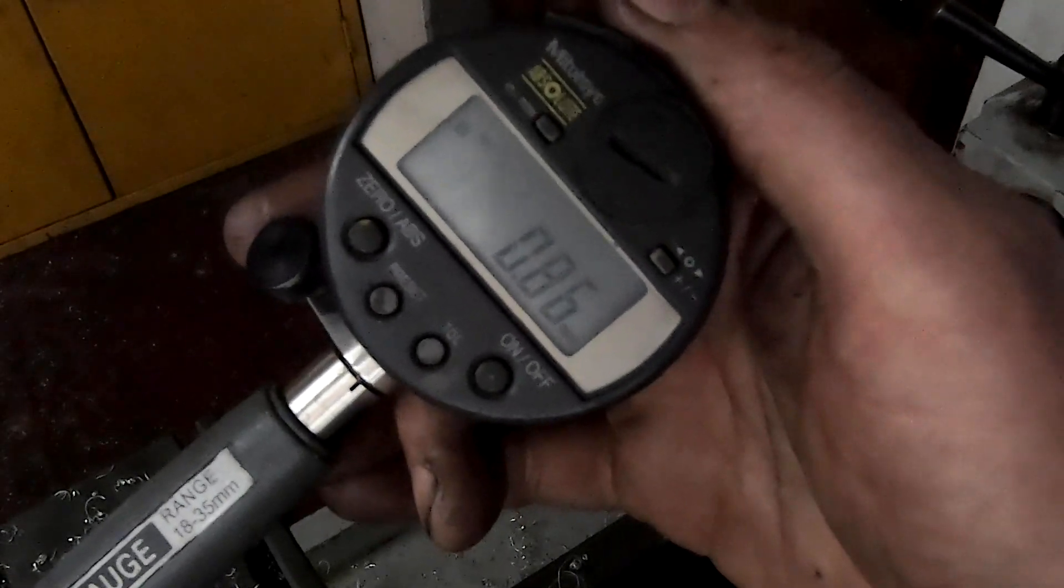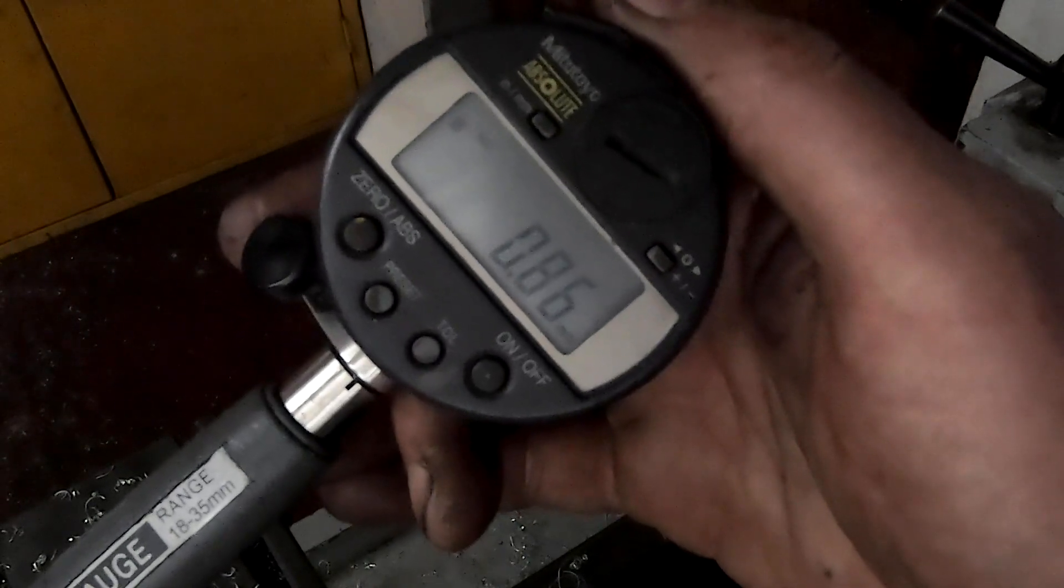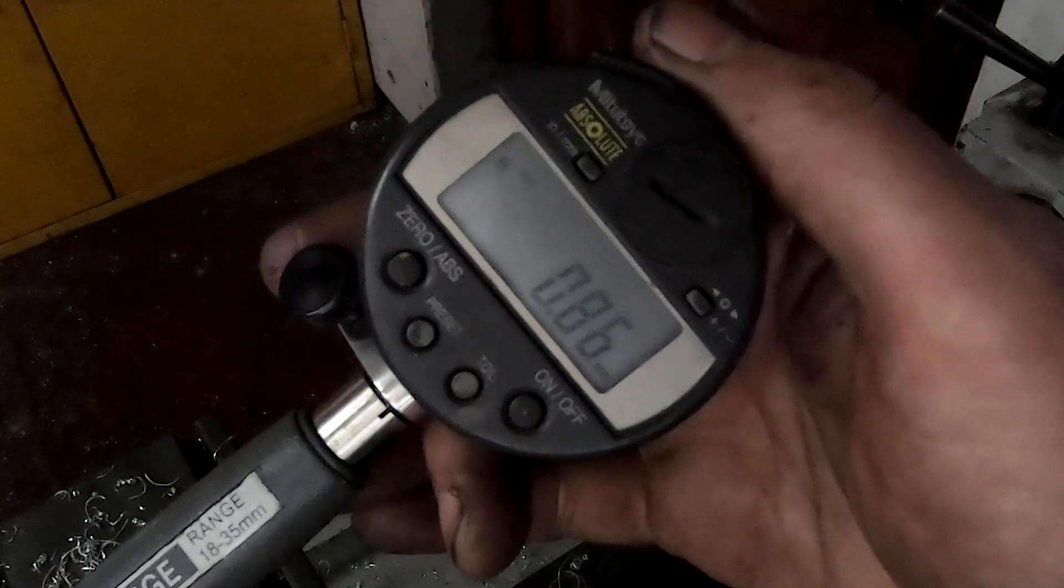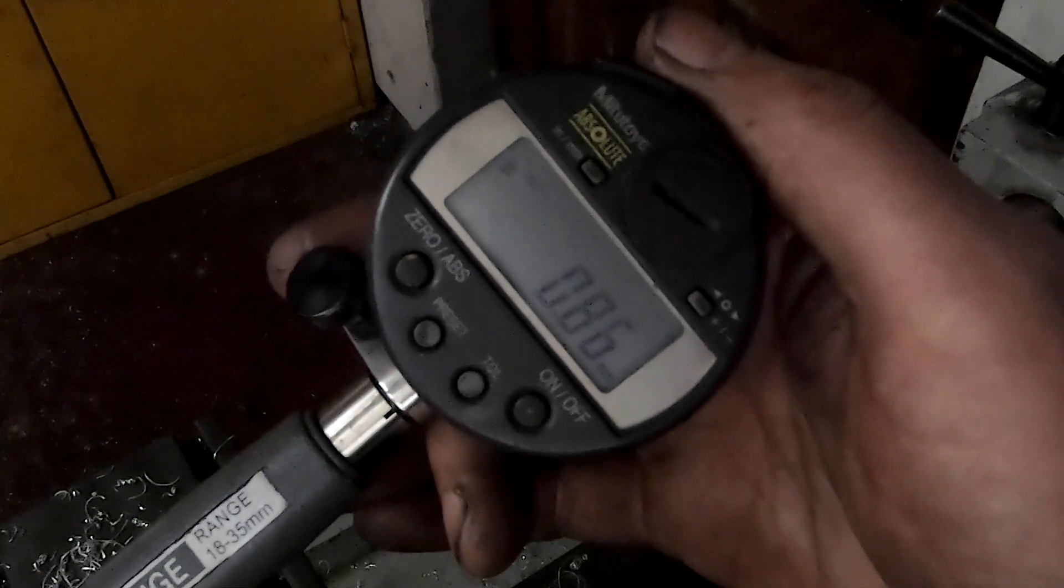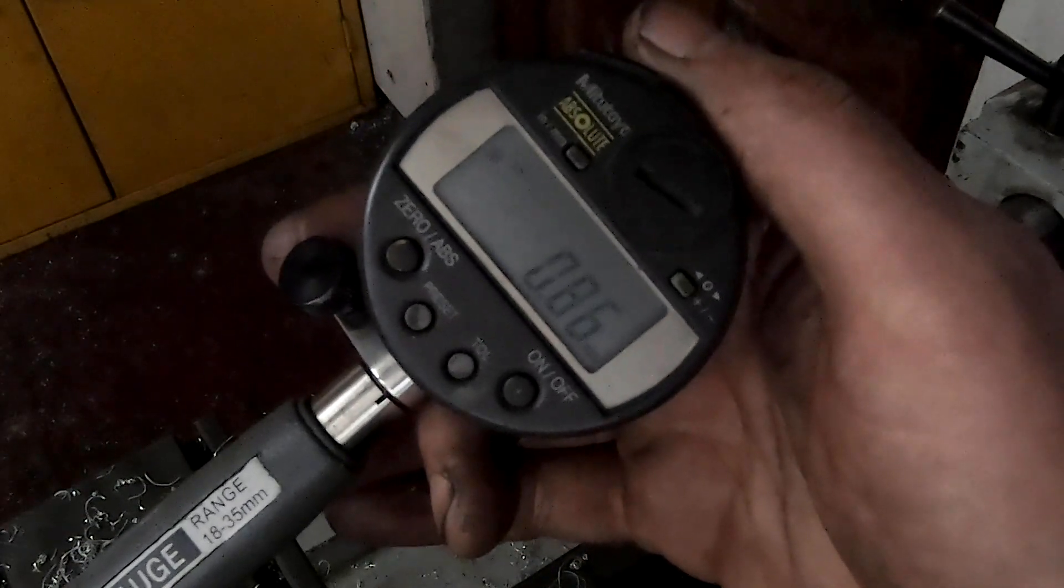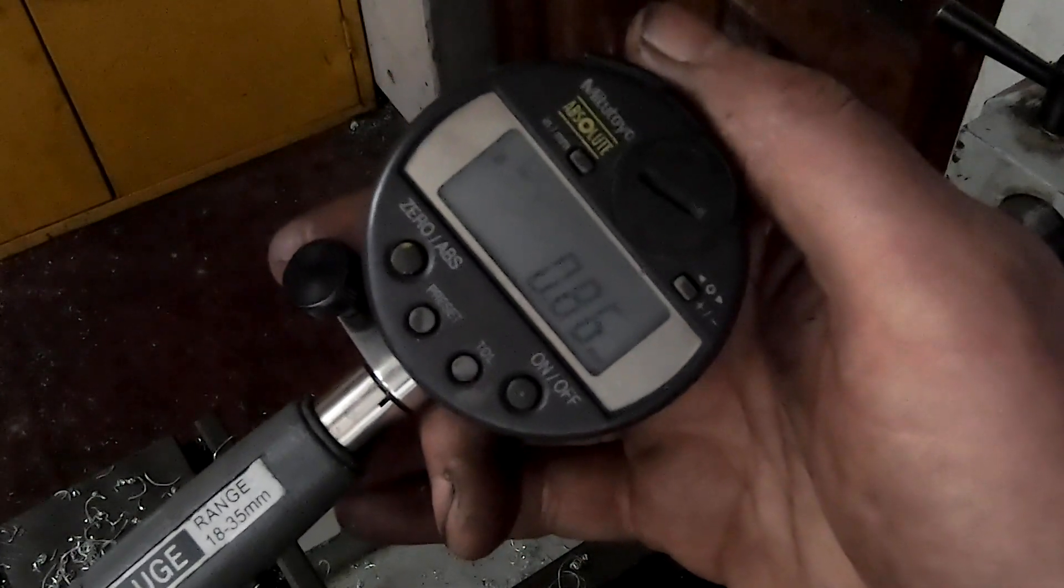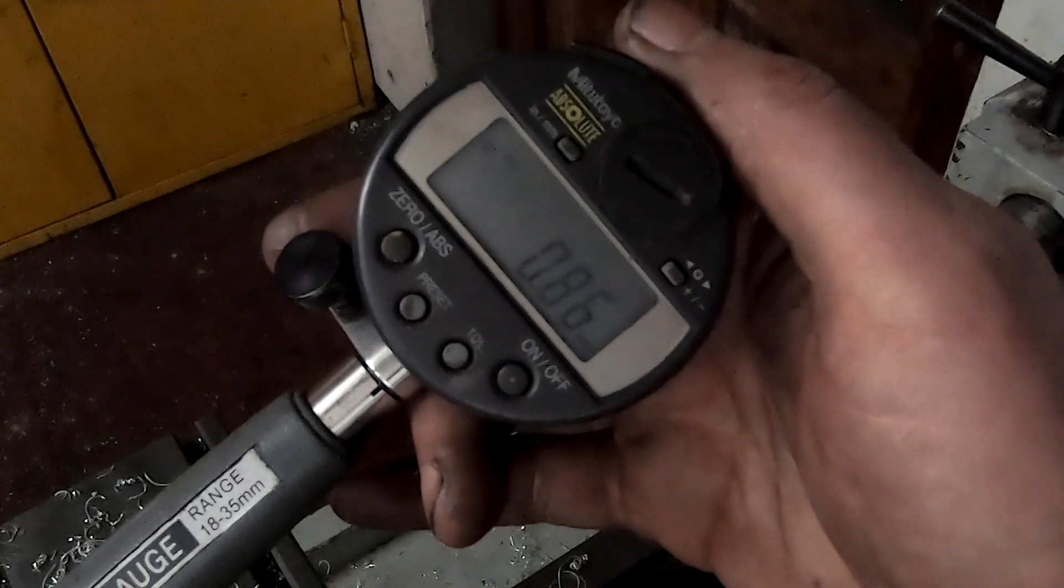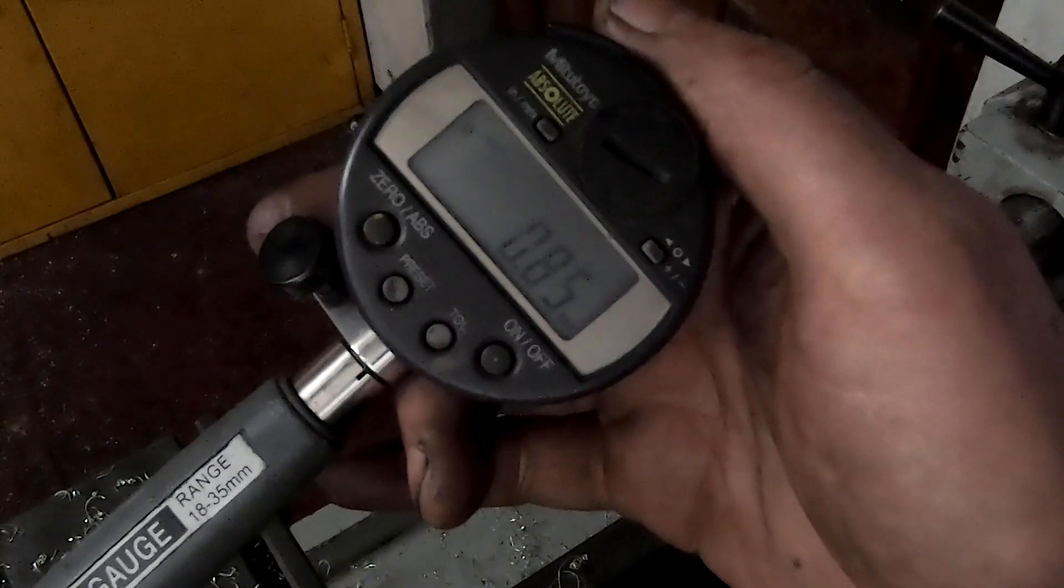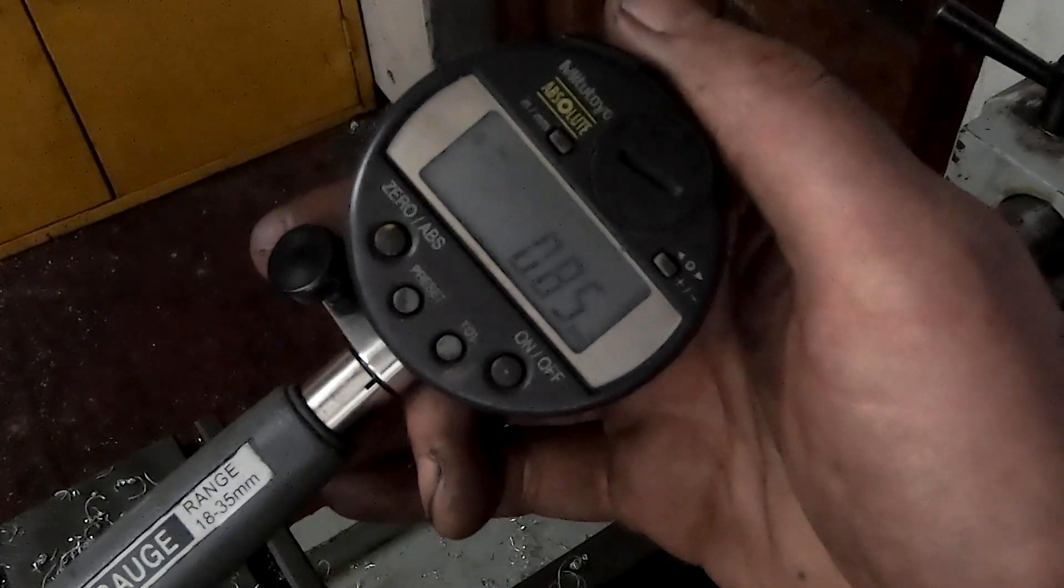Okay, so we have bored out this inner diameter and we have a dial bore gauge set up here now. The dial bore gauge is set so that when this dial gauge reads zero, we are at our bore dimension, the size we want. So as you can see here now, we are 0.86 of a millimeter off our finished dimension.